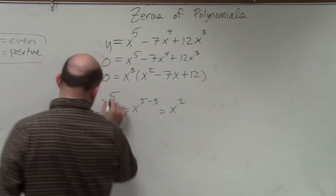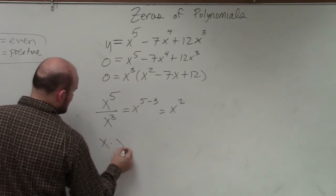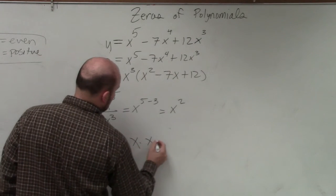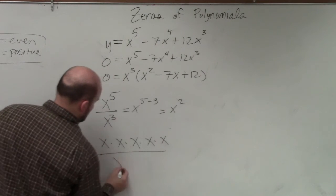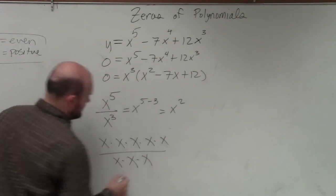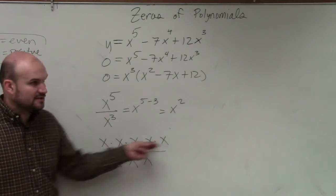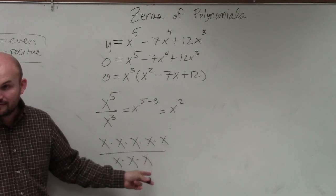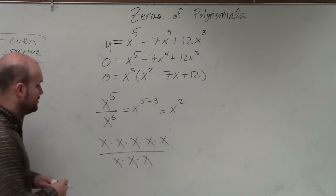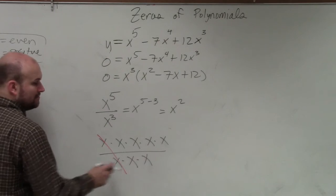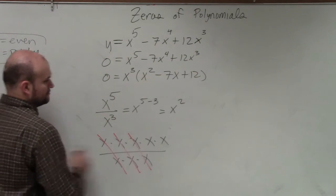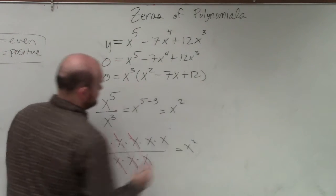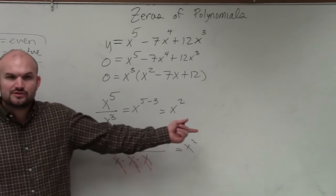So x cubed divides into x to the fifth x squared times. Or if you want to look at it this way, x to the fifth is 1 times 2 times 3 times 4 times 5. Would you agree with me? x cubed, it looks like that. And then would you guys agree with me that x divided by x is 1? You're just left with x squared.